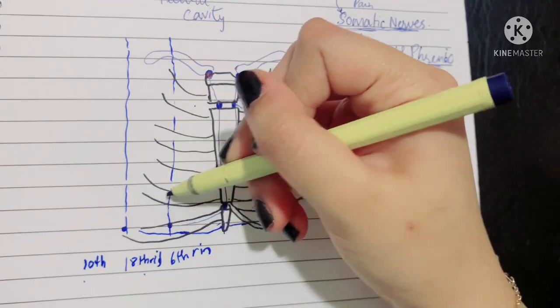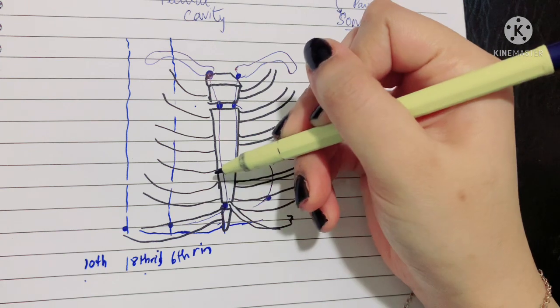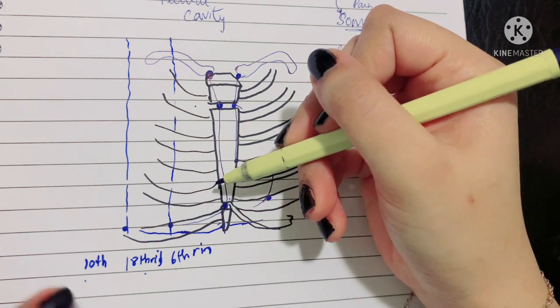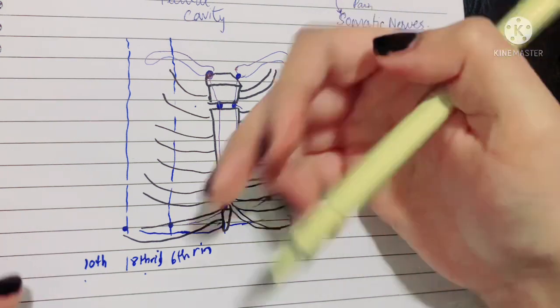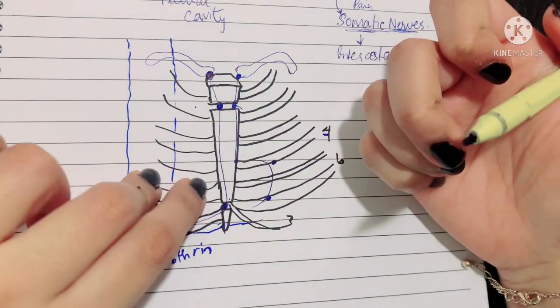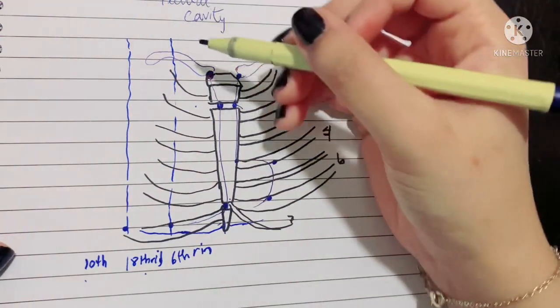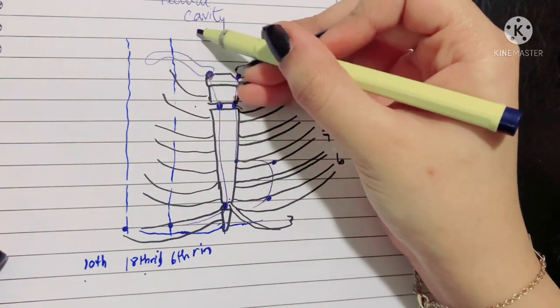Then it goes all the way behind till the tenth thoracic vertebra and two centimeter lateral to the tenth thoracic vertebra posteriorly the inferior margin ends.